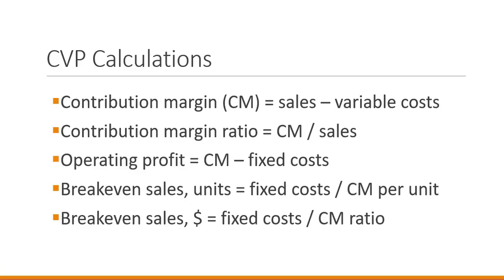The contribution margin ratio is the contribution margin divided by sales. We can get this through either the per unit numbers or the total dollar numbers — either way we'll get the correct ratio.